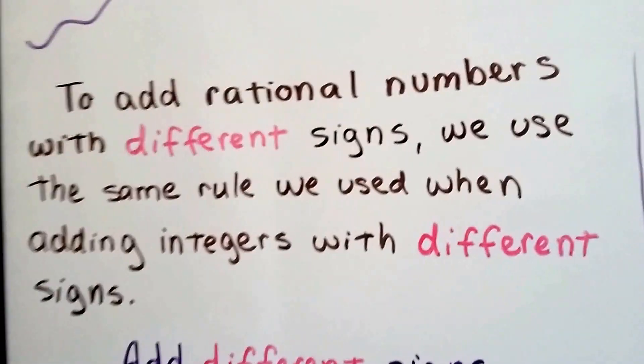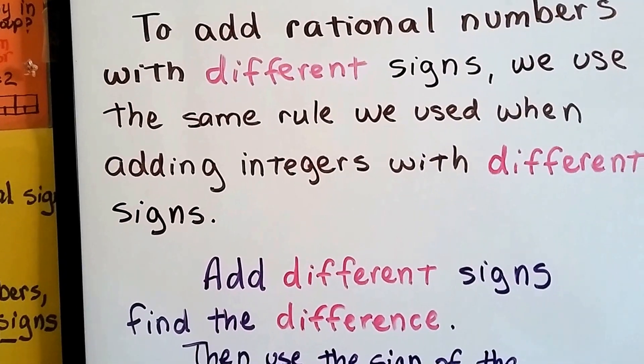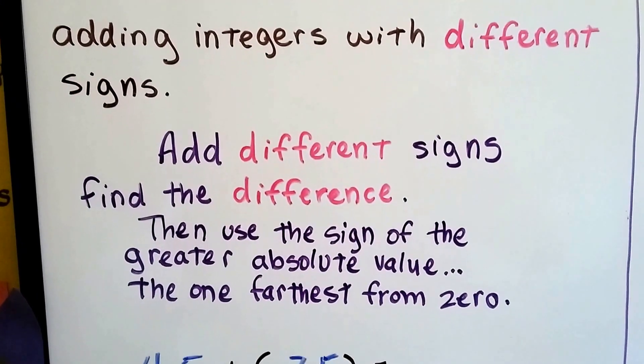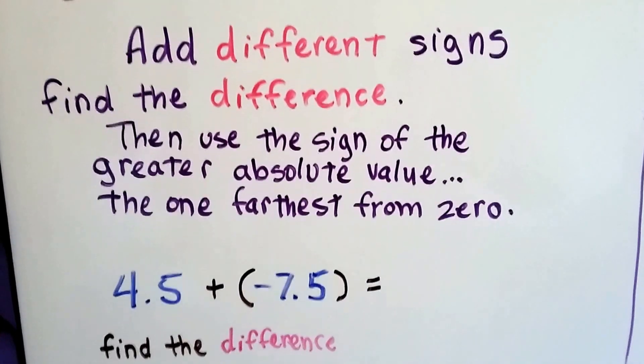To add rational numbers with different signs, we use the same rule we used when adding integers with different signs. We add different signs, we find the difference, don't we? Then we use the sign of the greater absolute value, the one farthest from zero.